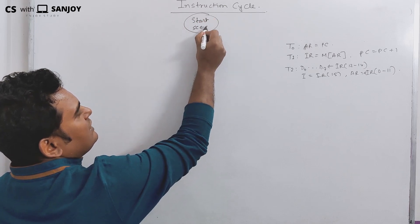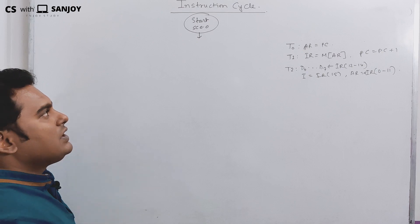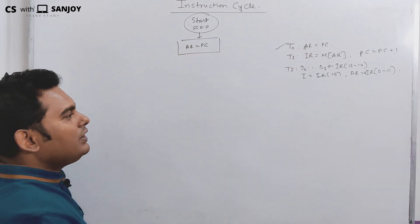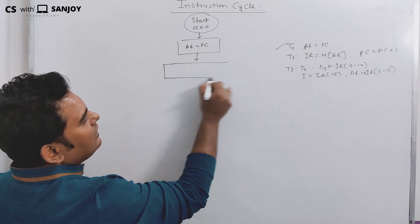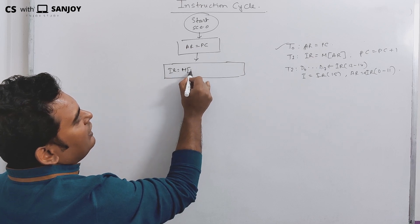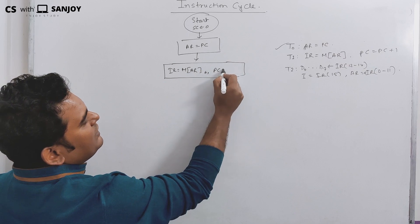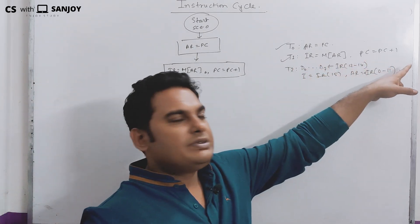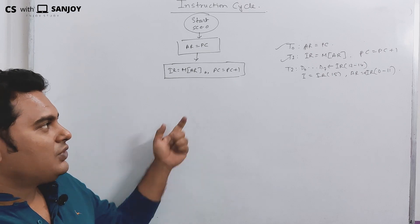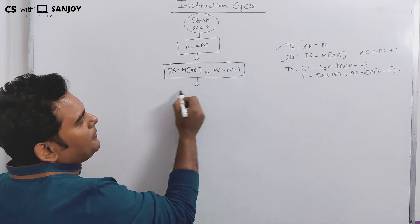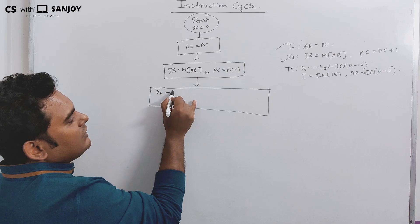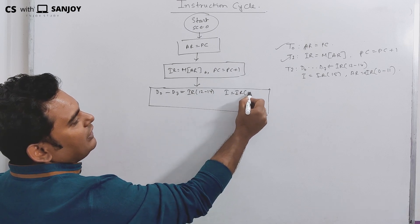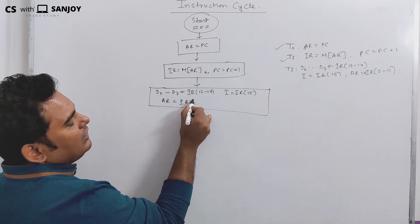The sequence counter initializes to zero. The first step is AR equals PC. Then IR equals M[AR] and PC equals PC plus one — the program counter is incremented. Then decode: D0 to D7 equals IR bits 12 to 14, I equals IR bit 15, and AR equals IR bits 0 to 11.